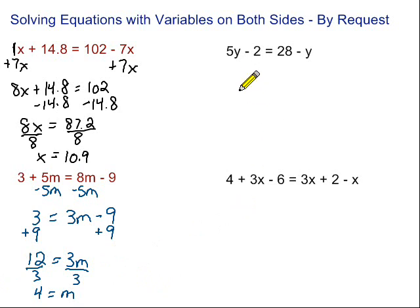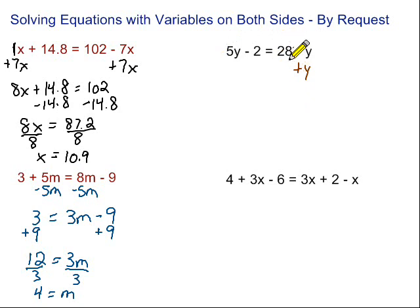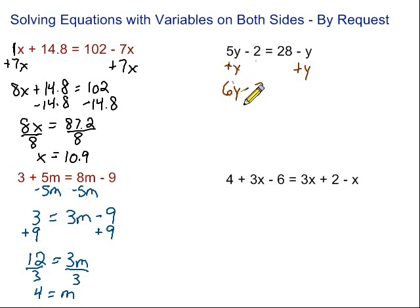Next: 5y minus 2 equals 28 minus y. Same story — we want to get all our variables together on one side of the equation. I don't like negatives, so I'm going to get rid of this minus y by doing the opposite, which is adding y, on both sides. 5y plus y — remember that's 1y — is 6y. So 6y minus 2 equals 28.